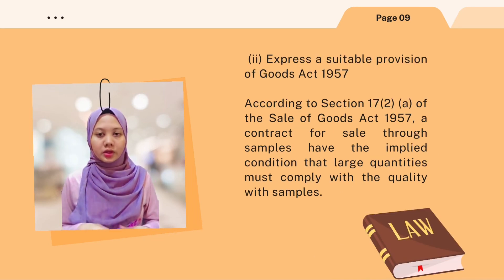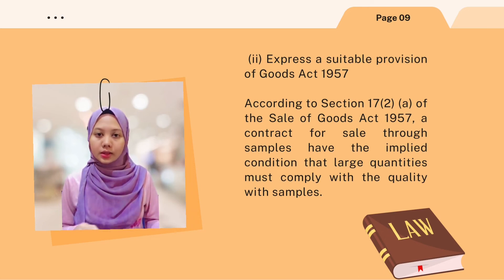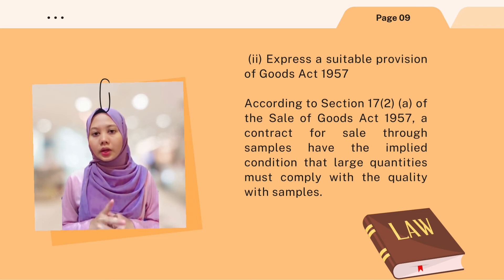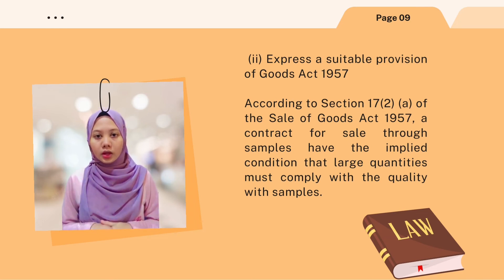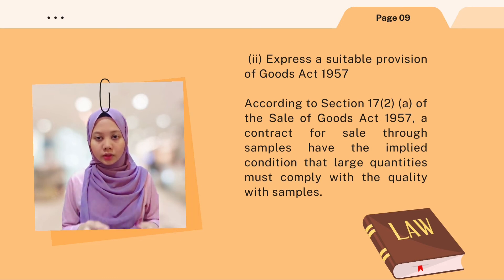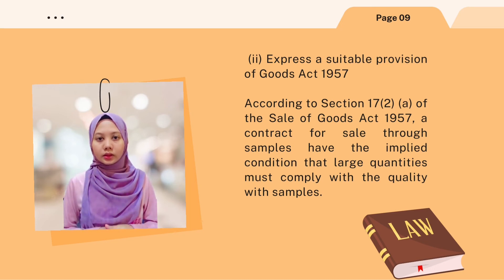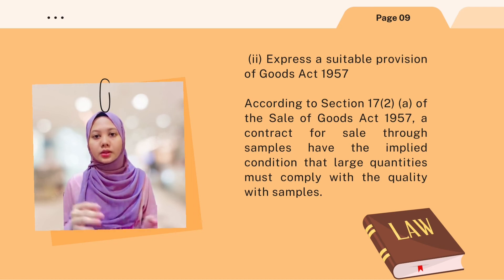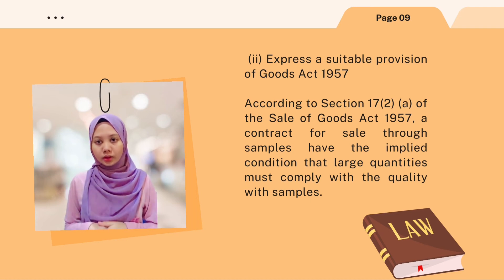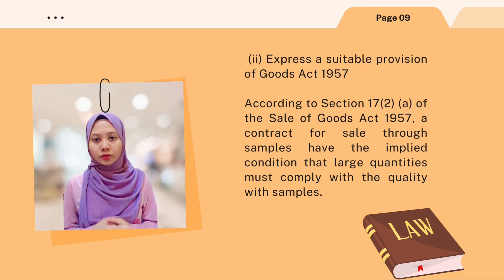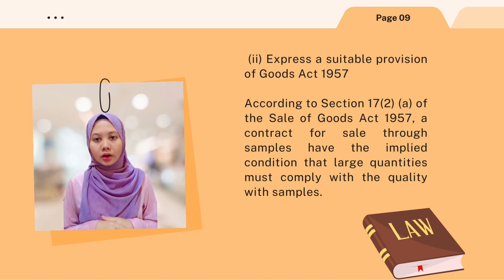The suitable provision is from the Sale of Goods Act 1957. According to Section 17(2A) of the Sale of Goods Act 1957, a contract for sale by sample has the implied condition that the bulk quantity must correspond in quality with the sample. Azahar had directed the dealer to make the order the same as the previously contracted flour, but it was not the same as the sample. Therefore, the action that can be taken by Azahar is to sue the dealer.